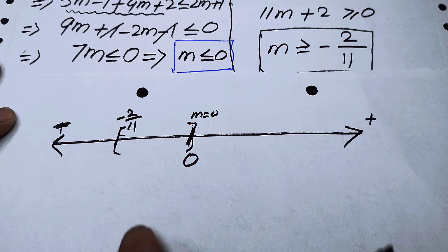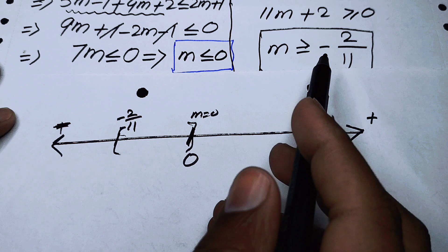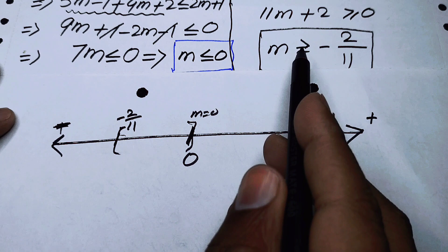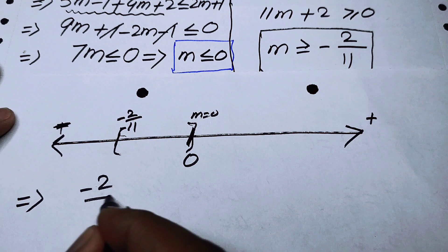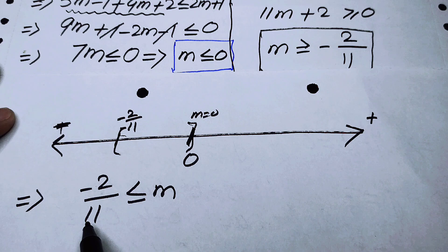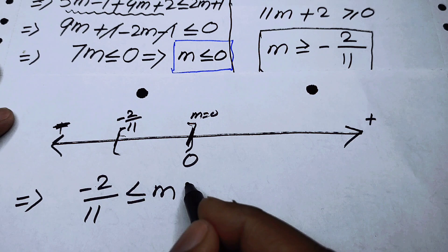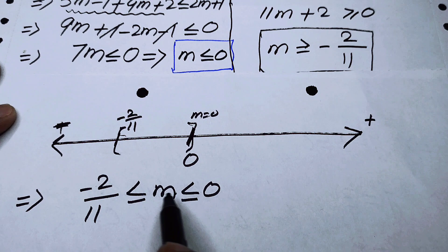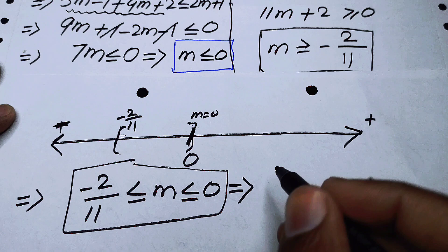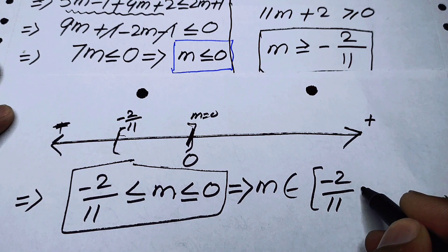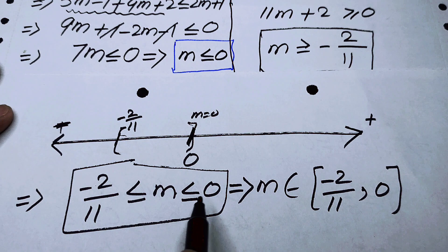Combining the two inequalities: from Case 2, m ≥ −2/11 (i.e., −2/11 ≤ m), and from Case 1, m ≤ 0. Together this gives −2/11 ≤ m ≤ 0. In interval notation, m belongs to the closed interval [−2/11, 0]. This is our final answer.